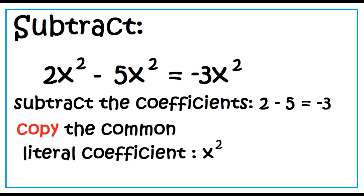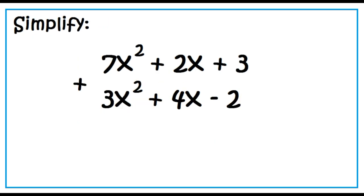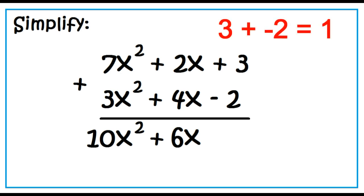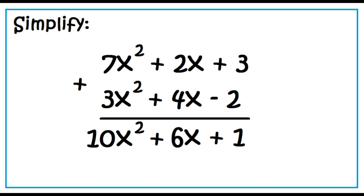Let's simplify polynomials with three terms. Simplify: 7x squared plus 2x plus 3 plus 3x squared plus 4x minus 2. Combine similar terms: 7x squared plus 3x squared is 10x squared; 2x plus 4x equals 6x; 3 plus negative 2 is 1. The answer is 10x squared plus 6x plus 1.